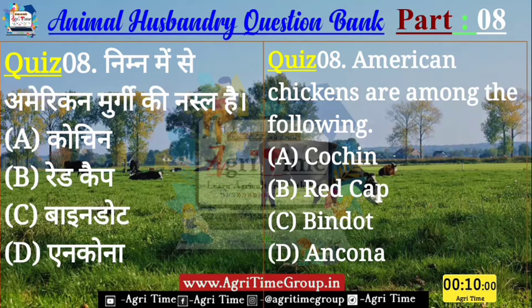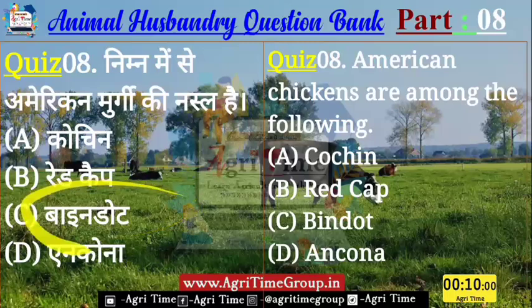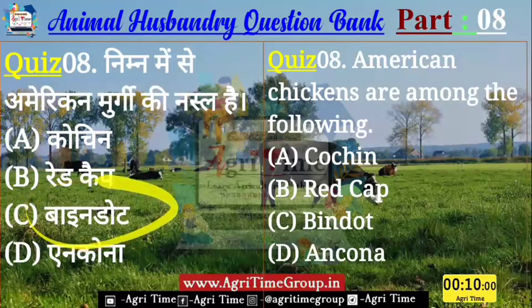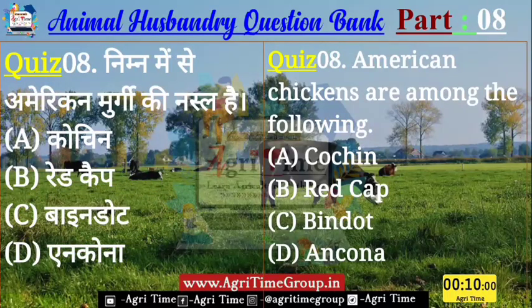Time up, dear Agrarians। Quiz number 8 का जिन्होंने C answer comment किया है — यानि कि Wyandotte — उन सभी का answer right है। ठीक है, चलिए बढ़ते हैं अगले question की ओर।